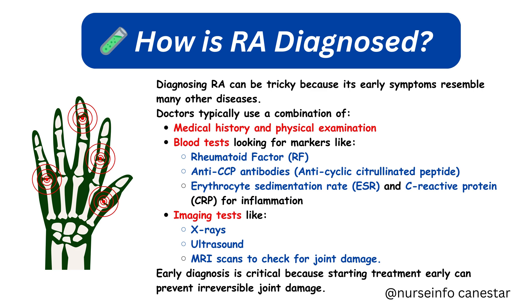Additional blood markers include anti-cyclic citrullinated peptide, erythrocyte sedimentation rate (ESR), and C-reactive protein (CRP), which indicate levels of inflammation.